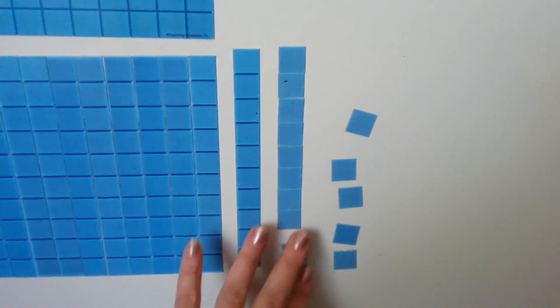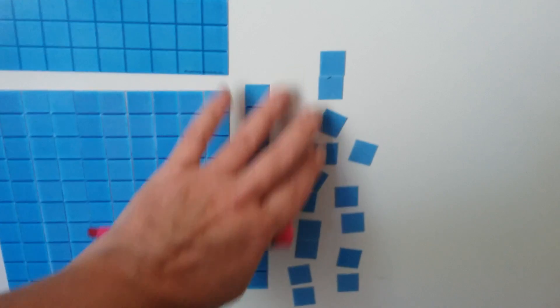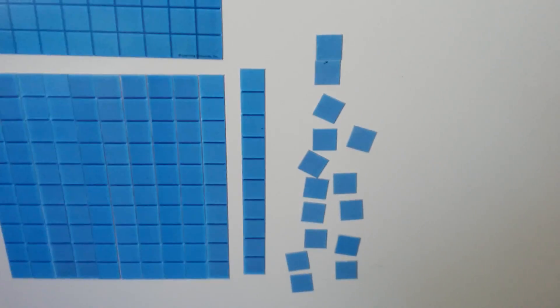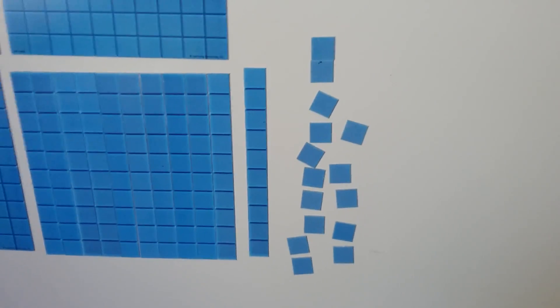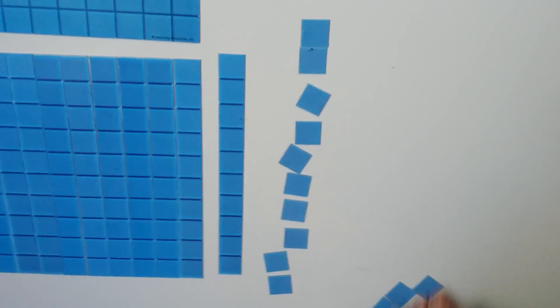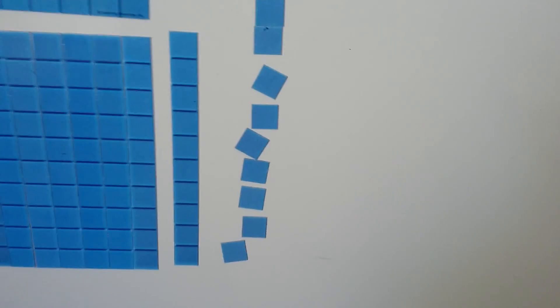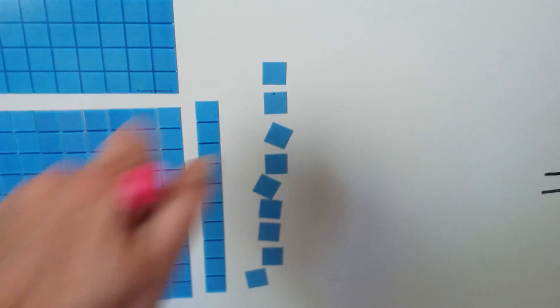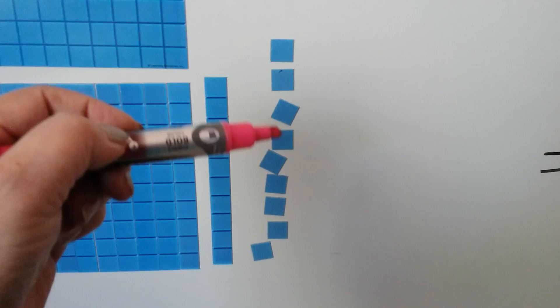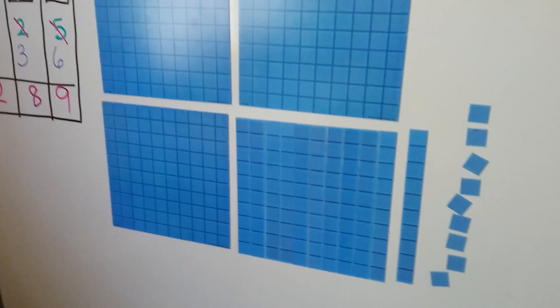So what we can do is break this 10 up into ones and regroup it to be ones. Now we can take six of them away — one, two, three, four, five, six. We take six of them away, and how many ones are left? One, two, three, four, five, six, seven, eight, nine. Just like we got here — we have nine ones.